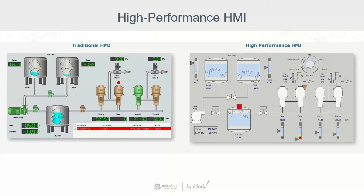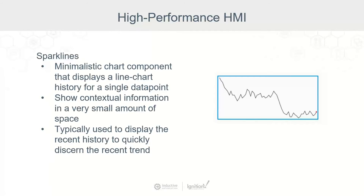What are some of the tools that help you build a high-performance HMI? On the left is a traditional approach; on the right, we're utilizing different techniques for high-performance. First is the sparkline chart, which displays a line chart history from a single data point with no axes. Typically these are used to display recent history as a way to discern a recent trend — is it going up, is it going down, what's happening with that value? They show contextual information in a very small amount of space.